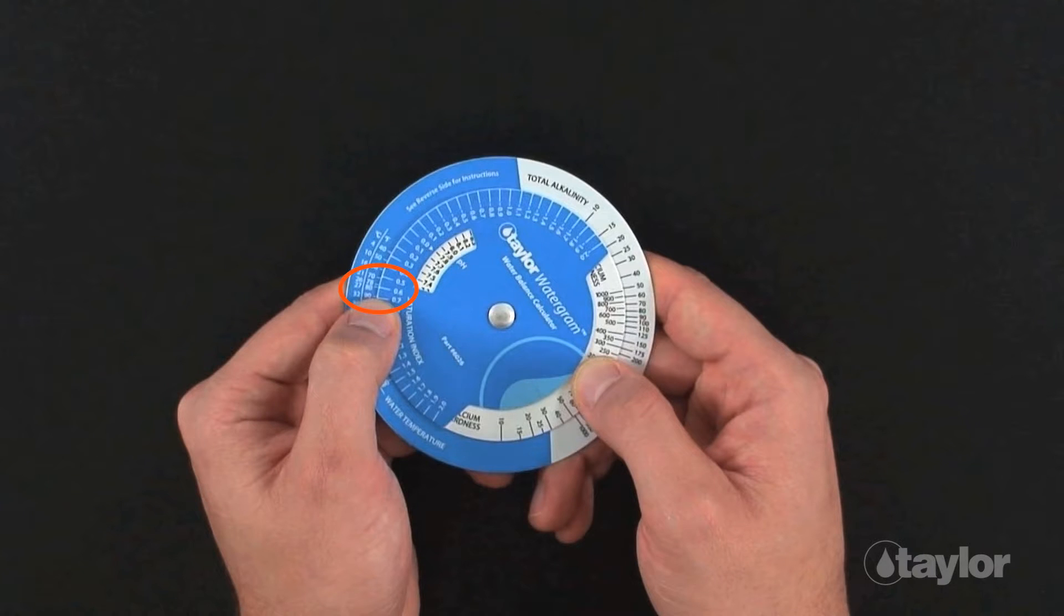The saturation index shown, 0.6, indicates scaling water.